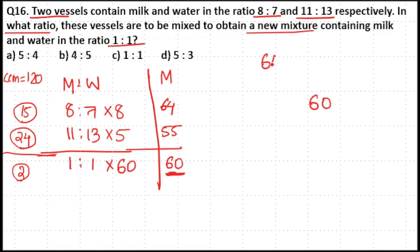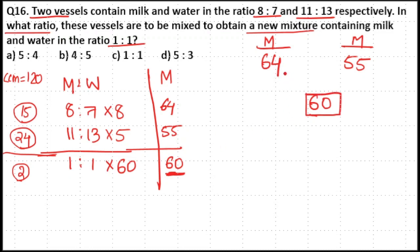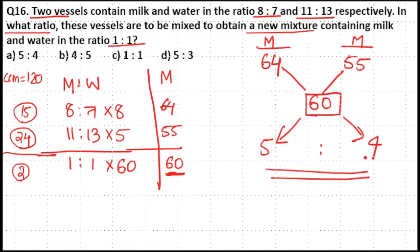Initially we have 64 units in the first vessel and 55 units in the second vessel. In the final mixture we have 60 units. Using the allegation method, subtract 60 from 64: 64 minus 60 is equal to 4. And 60 minus 55 is equal to 5. So the new ratio is 5:4.